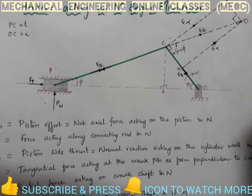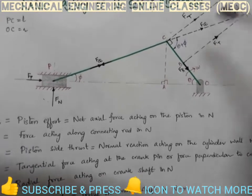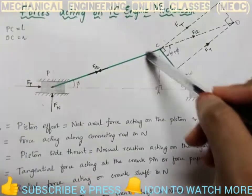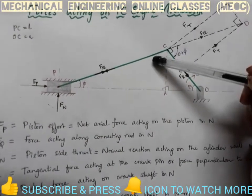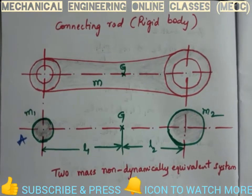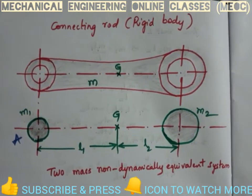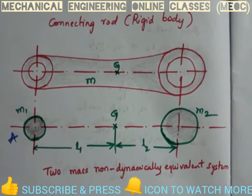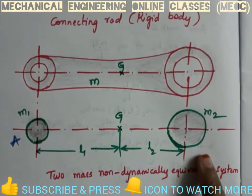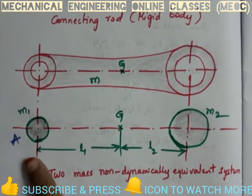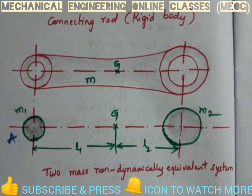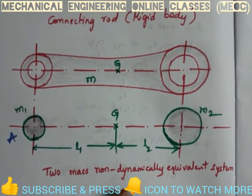So L1 into L2 might not be equal to Kg² because we are not finding L1 or L2 from that expression. So when we are not using that expression, there is no guarantee that the equation will hold true. Since M1 and M2 locations are already fixed, we cannot guarantee that L1 into L2 will equal Kg², which is the condition that satisfies all three conditions and makes the system dynamically equivalent.